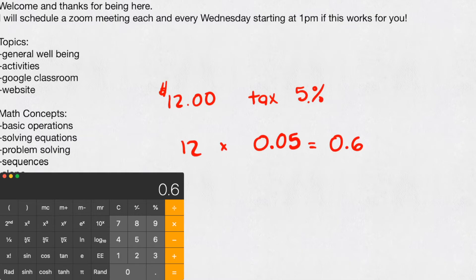Now again, I'll do it one more time, just so you can see that. So $12, I'm going to hit the times button, 0.05, that's 5% tax, and gives me $0.60. So this number right here is the tax. It is $0.60 for tax.